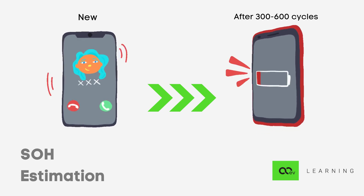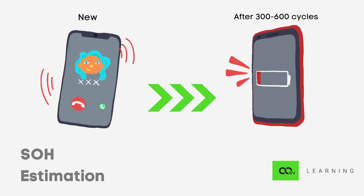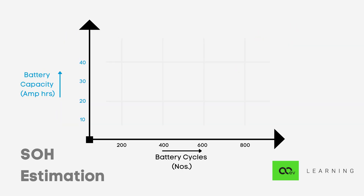Let's have a look at how this works. On the Y-axis we have capacity represented by ampere hours, and on the X-axis we have battery cycles. Now, what do we mean by cycle life? Over time, as you charge and discharge the battery, the capacity of the battery pack will decrease.